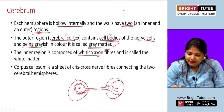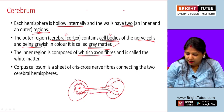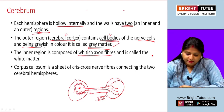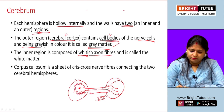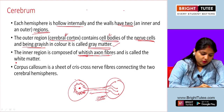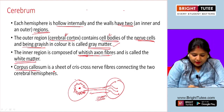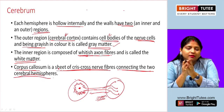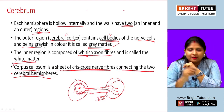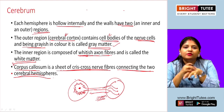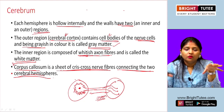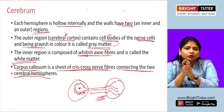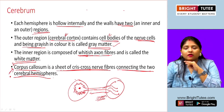The corpus callosum is a sheet of crisscross nerve fibers connecting the two cerebral hemispheres. Both hemispheres are connected to each other with the help of the corpus callosum because it is important to transfer information from one hemisphere to the other.